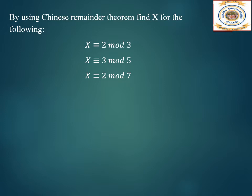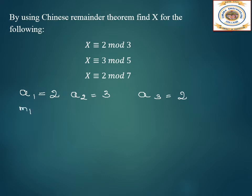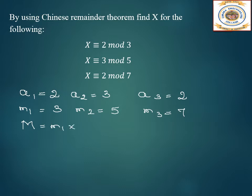We have to find a value of x. First we will list out what is given: a1 is 2 (from the first equation), a2 is 3 (from the second), and a3 is 2. Next, small m1 is 3, small m2 is 5, and small m3 is 7. Now we calculate capital M: M equals m1 into m2 into m3, which is 3 into 5 into 7, giving us 105.